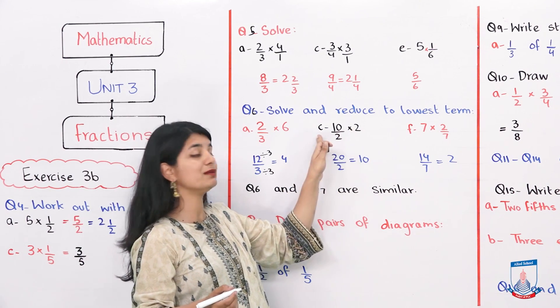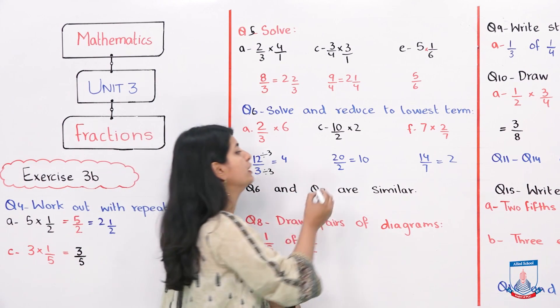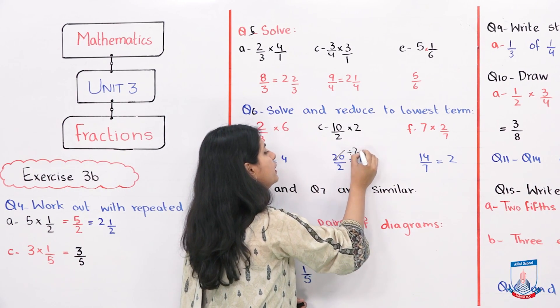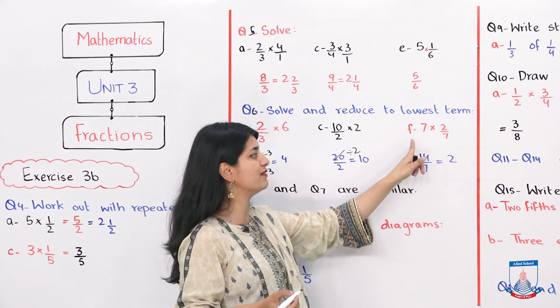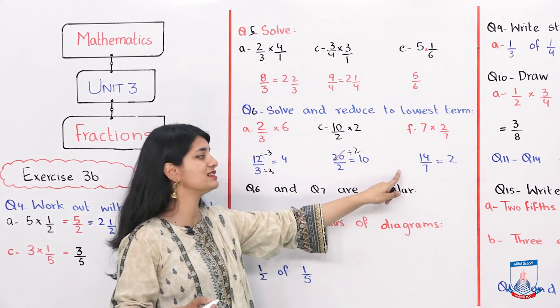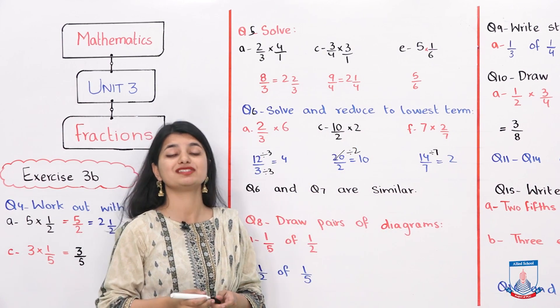10 over 2 into 2. If we see C part, 10 into 2 is 20. 2 is below as it is. We will divide them by 2. The answer is 10. Lastly, 7 into 2 over 7. 7 into 2 is 14. 14 over 7. We have to divide them by 7. 2 is your answer in the lowest terms.